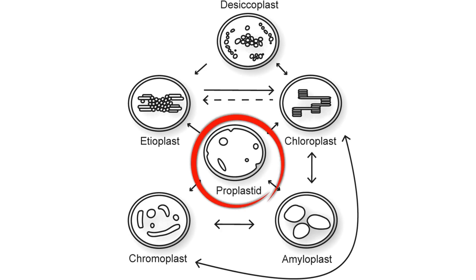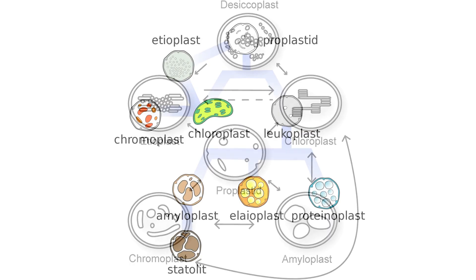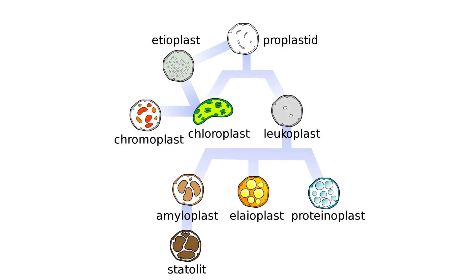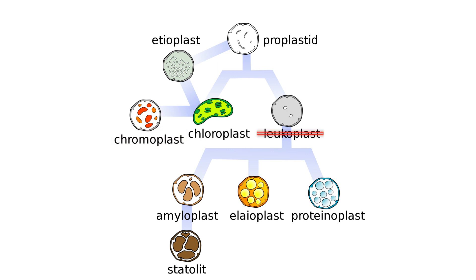Proplastids are the precursors to all these Plastid types. They're undifferentiated and can develop into chloroplasts, chromoplasts, or Leukoplasts, depending on the plant's needs.